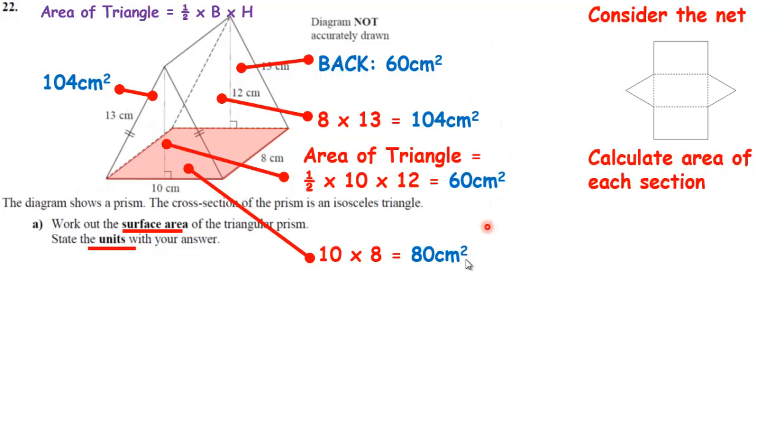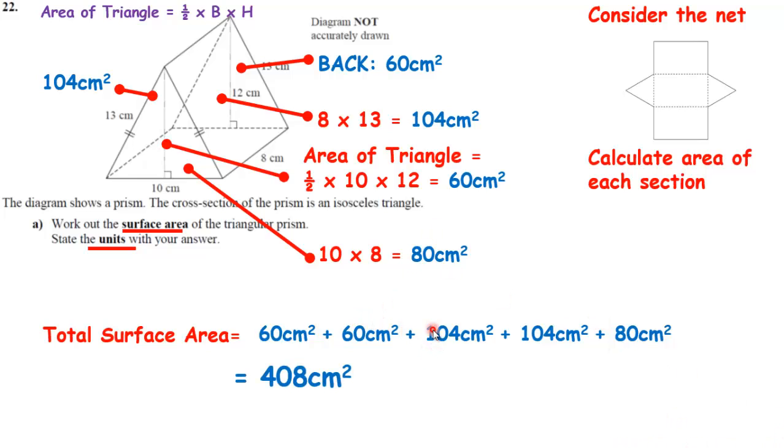All of these figures that I have put in blue here, these are the areas of the different faces. I just need to add those together. 60, add 60, add 104, add 104, add 80. Do take your time with this. A lot of people are prone to making mistakes. They add up to 408 cm squared.